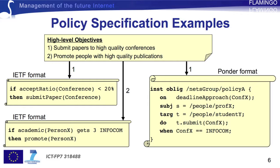At the top, there are two such examples that represent high-level objectives of a research group. The first says that research papers should be submitted to high-quality conferences, and the second that people with high-quality publications should be promoted.